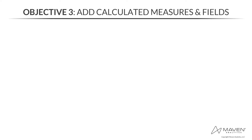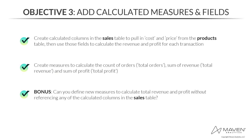For the third objective, we're adding calculated measures and fields to enhance the model. Our first task is to create new calculated columns in the sales table to pull in cost and price from the products table, then use them to calculate revenue and profit per transaction. The second task is to create measures for total orders, total revenue, and total profit. The third task is an optional bonus: define new measures to calculate total revenue and profit without referencing any calculated columns in the sales table.